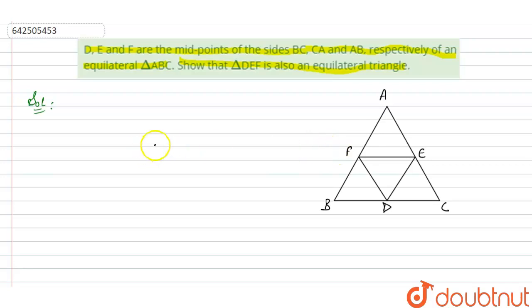So now what we have to prove? To prove triangle DEF is an equilateral triangle.